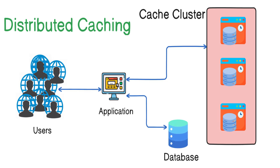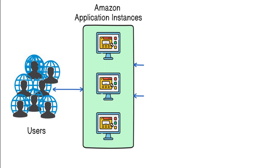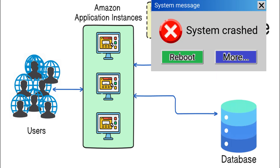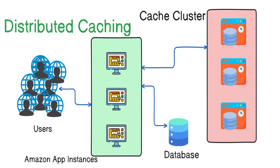Let me break it down with an example. Imagine we are running an e-commerce application like Amazon, where users frequently fetch product details. If they store all the cache data in a single server, it will definitely crash under high load. With distributed caching, different product details can be stored across multiple cache servers. So when a user requests data, it can be fetched from multiple nodes, ensuring faster responses and reduced load on any single cache instance.